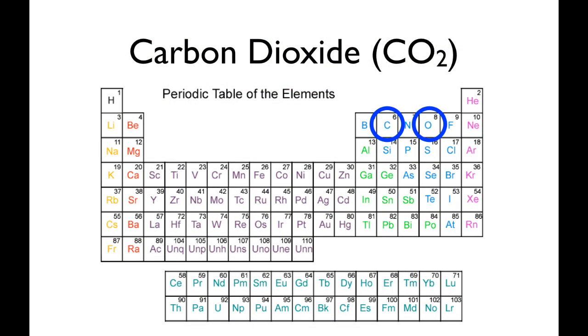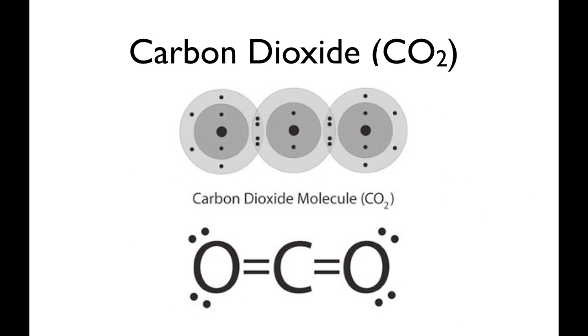Back to covalent bonds. We're going to look at carbon dioxide. So carbon, you recall, has four electrons in its valence shell. Oxygen has six. So in order for this molecule to be stable, you need to share more than one pair of electrons between the carbon and each of the two oxygens. So this means that with these two lines right here, that represents two pairs of electrons being shared. And these two lines here represent two pairs of electrons being shared. And now, if you count up all the electrons around each atom, everybody is happy. They all have eight electrons in their valence shell.